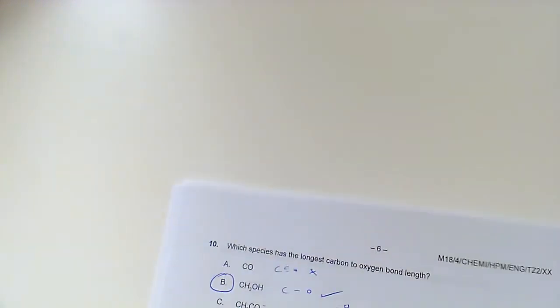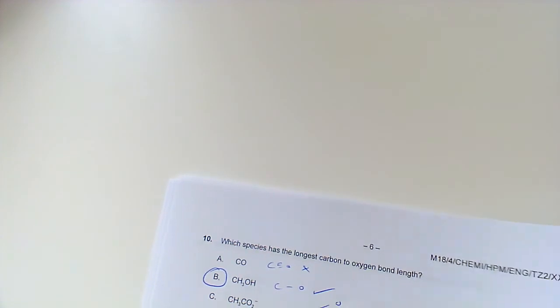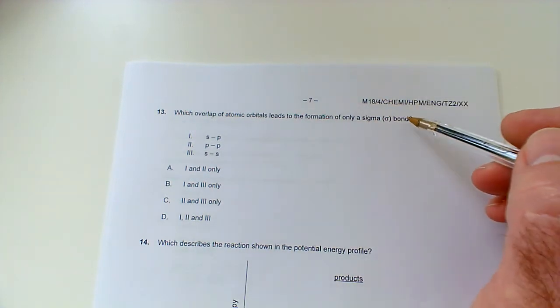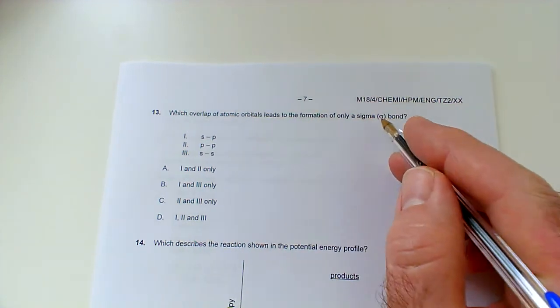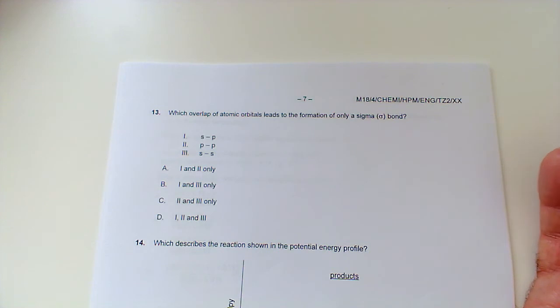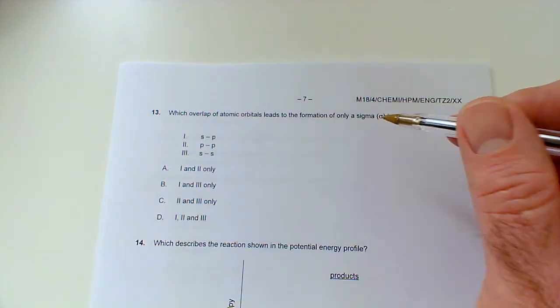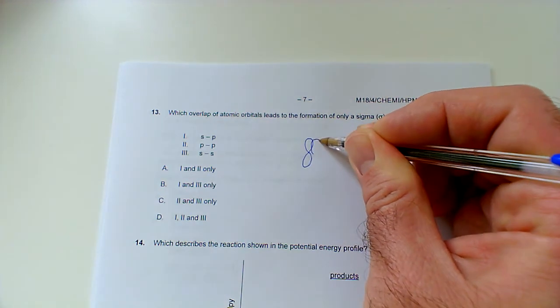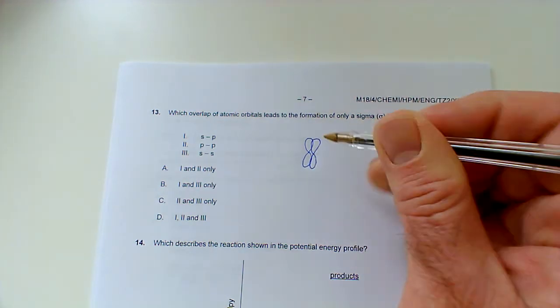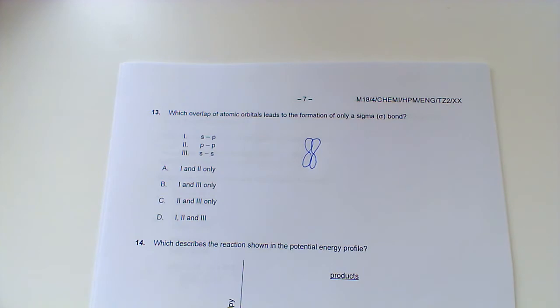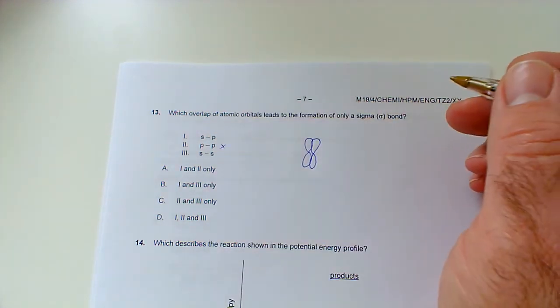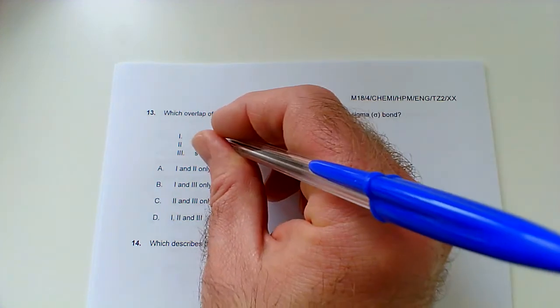Question 13: which overlap of atomic orbitals leads to the formation of only a sigma bond? What's not a sigma bond? It's a pi bond, because a pi bond is formed by the sideways overlap of p orbitals. So whilst p orbitals can overlap to give us pi bonds if they overlap head on, the sideways overlap could also lead to a pi bond.